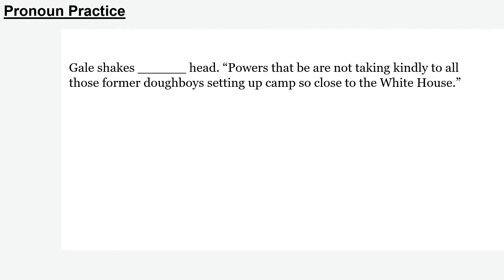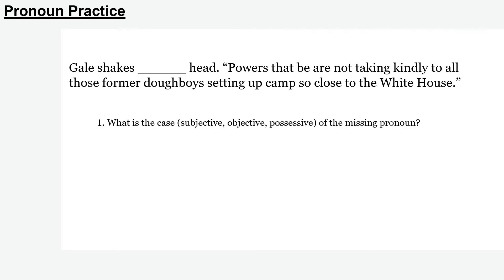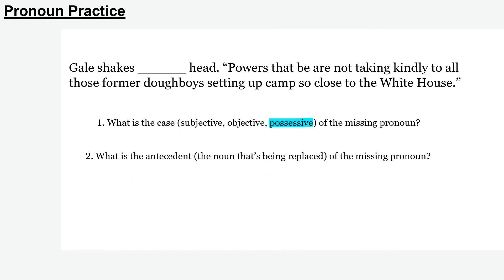Let's practice. We have the sentence: 'Gale shakes ___ head. Powers that be are not taken kindly to all those former doughboys setting up camp so close to the White House.' The first question we ask is: what is the case of the missing pronoun? Gale shakes ___ head — it's the head of Gale, so that tells us this is possessive. Gale is owning the head. Next, we figure out the antecedent — whose head is it? It's Gale's head, so Gale is our antecedent.